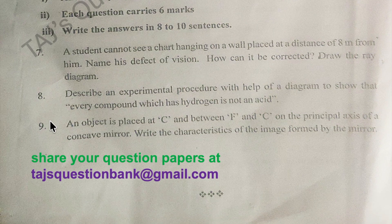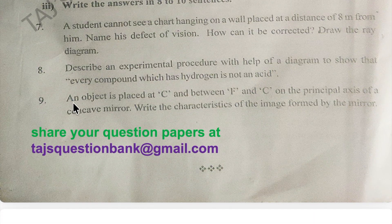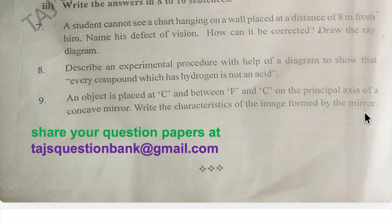The eighth question is: describe an experimental procedure with the help of a diagram to show that every compound which has hydrogen is not an acid. The last question of part A is: an object is placed at C and between F and C on the principal axis of a concave mirror — write the characteristics of the image formed by the mirror.